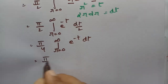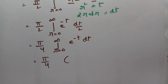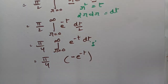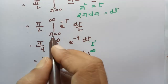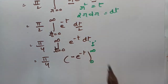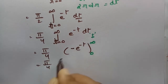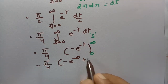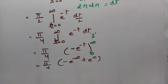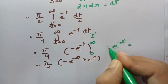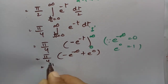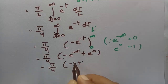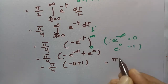So this is pi by 4 times, if I integrate with respect to t, this will be e to the power minus t between the limits 0 to infinity. So the t limits also go from 0 to infinity. This will be pi by 4 times minus e to the power minus infinity, and for lower limit minus of minus gives plus e to the power 0. We know that e to the power minus infinity is 0 and e to the power 0 is 1. So this will be pi by 4 times minus 0 plus 1, which is equal to pi by 4.